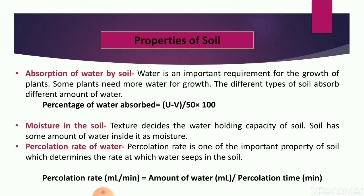Now we will start the first property given in this chapter: absorption of water by soil. Every soil absorbs some amount of water, and that water absorption capacity depends on how porous the soil is — that is, what spaces are present between the soil particles. Some plants require more water for their growth while some require less. If the soil has good water holding capacity, plants that need more water will grow very well in that soil. Different types of soil absorb different percentages of water.